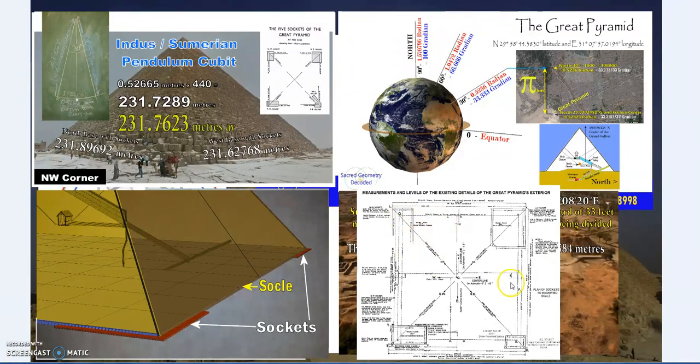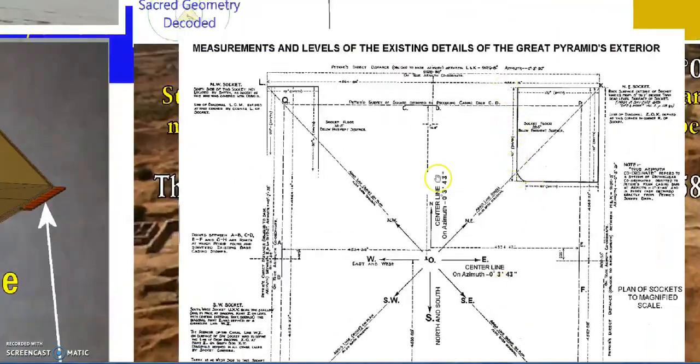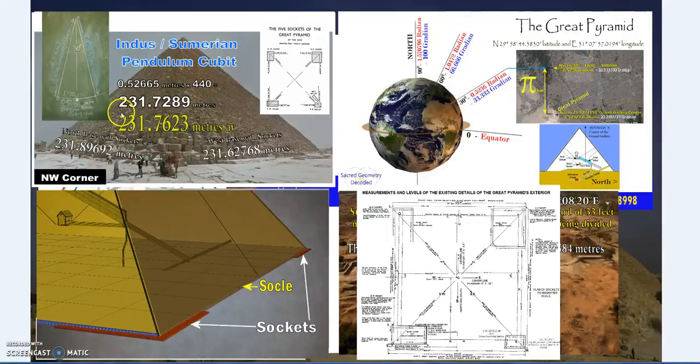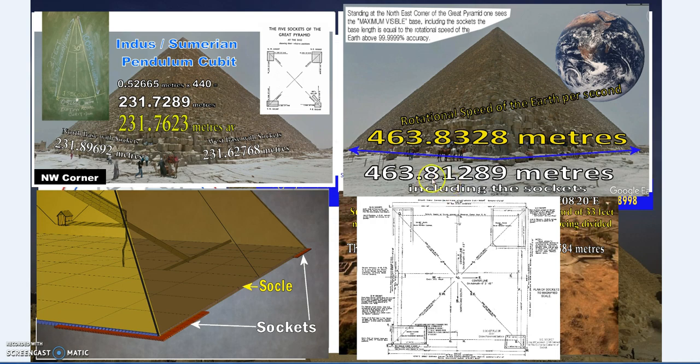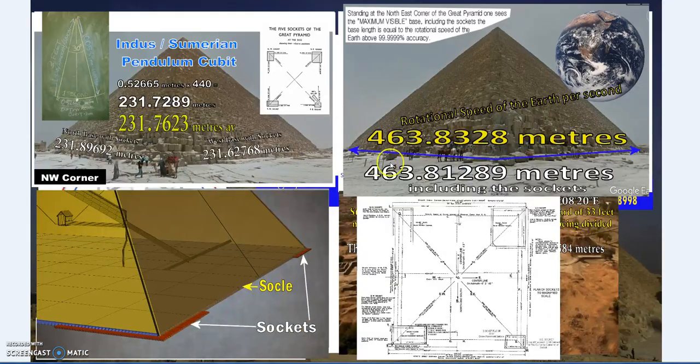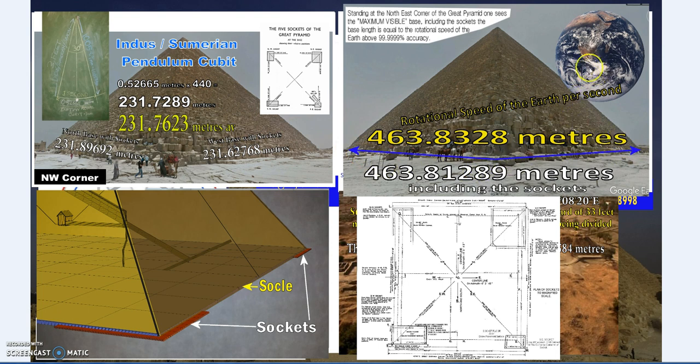This defines the base of the pyramid including the sockets. That pendulum created by that slightly longer meter—one meter and six millimeters. If you stand at the corner of the pyramid and include the sockets, that maximum visible length is the rotational speed of the earth per second—86,400 seconds per day.